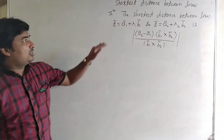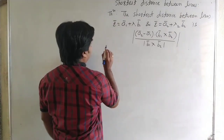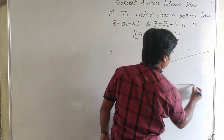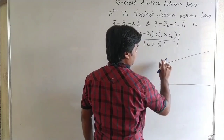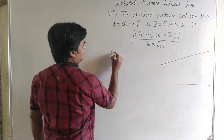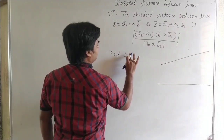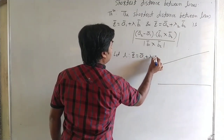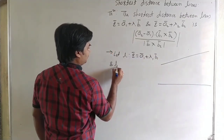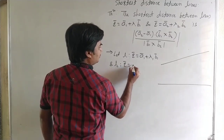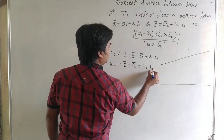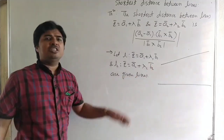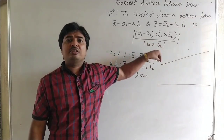Given two lines, we can find the shortest distance. Line L1 is r̄ = ā₁ + λ₁b̄₁, and line L2 is r̄ = ā₂ + λ₂b̄₂. These are the given lines, and we can find the shortest distance between them.